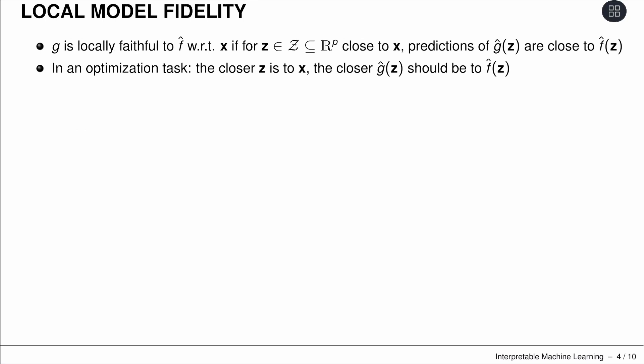Now let's talk about the other part, the local fidelity. G should be locally faithful to F hat with respect to x. We're talking about one very specific input vector or tensor x. We have some z's which are close—they are in some space which is close to where x is living.